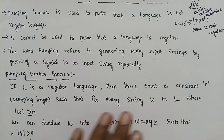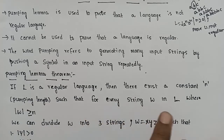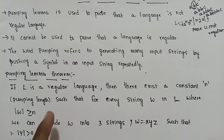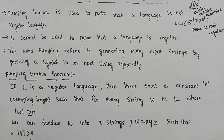For every string W in the language — a language is nothing but a set of strings. A regular language has a constant N associated with it.